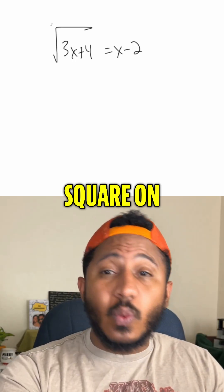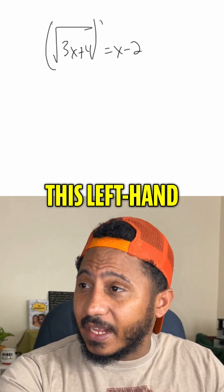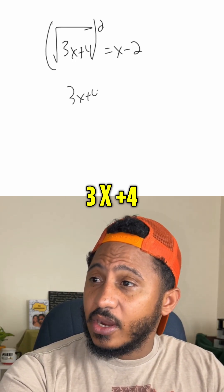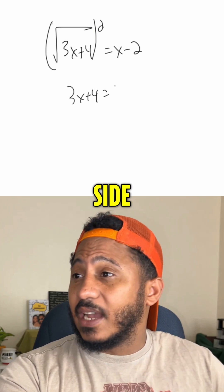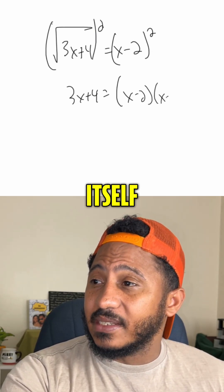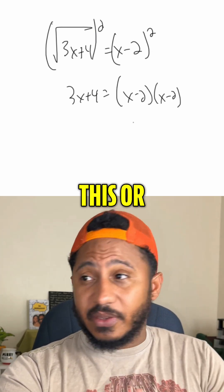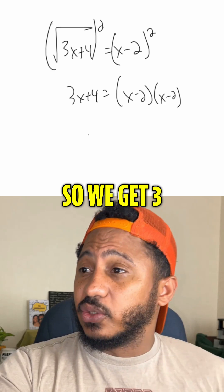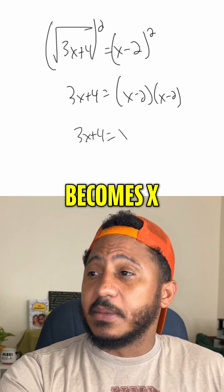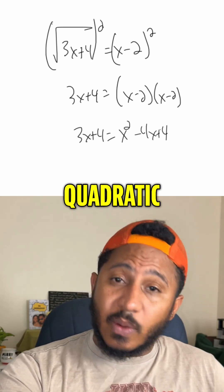To get rid of this radical, we would square both sides. Squaring the left-hand side gives us just 3x plus 4. Squaring the right-hand side means we have to multiply it by itself — x minus 2 times itself. In other words, we have to FOIL this, or multiply it out. So we get 3x plus 4 equals x squared minus 4x plus 4.